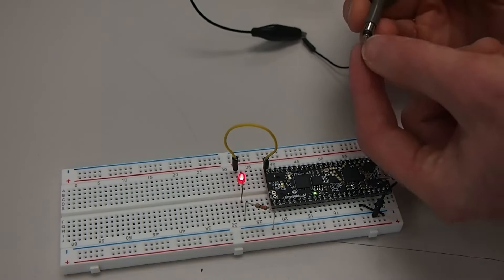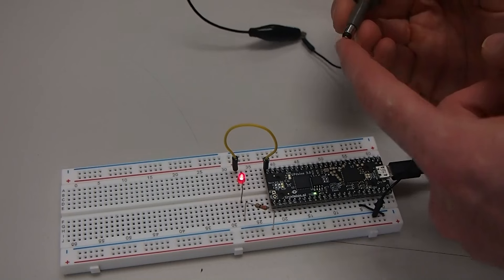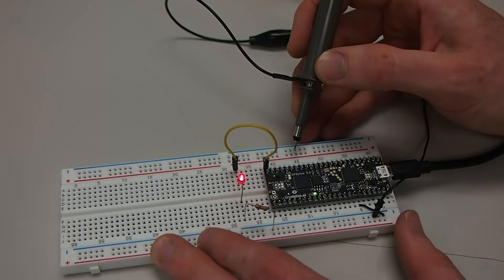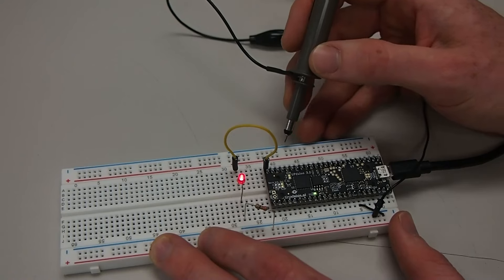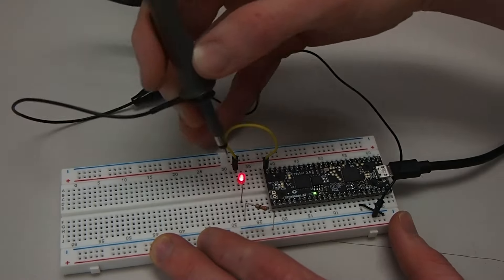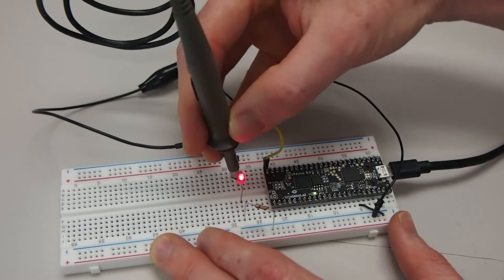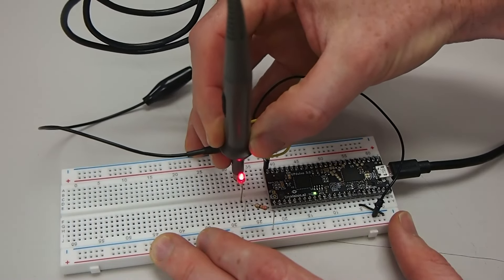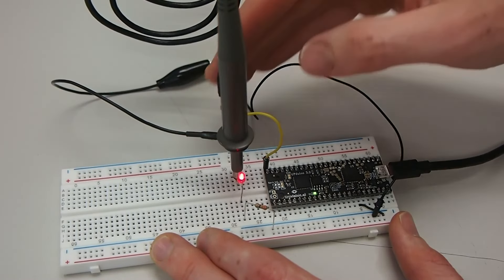If you want to, you could also use an alligator clip to clip onto here, but usually it's easier to just use the probe directly. And I'm going to go ahead and just stick it in this point here at the top of the LED, and we'll take a look and see what's going on there.